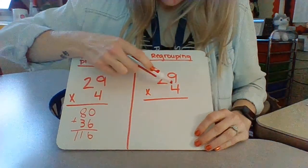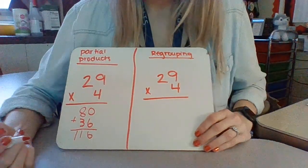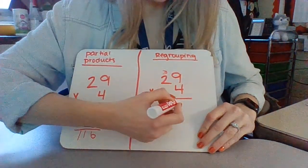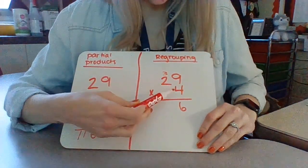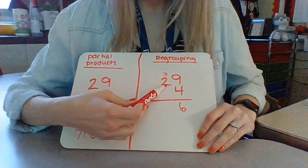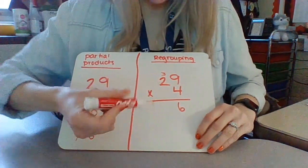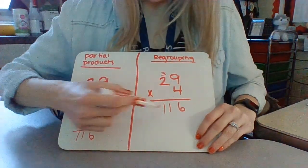So for regrouping, remember we start here. 4 times 9 we said was 36. So our 3 goes on top and our 6 goes on the bottom. Now I take 4 times 2, which is 8, plus 3. So 8 plus 3 is 11. We got the same answer.